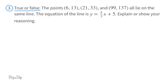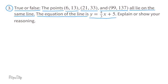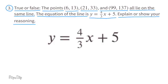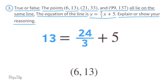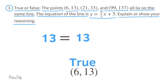Problem number three: true or false? The points (6, 13), (21, 33), and (99, 137) all lie on the same line with equation y equals 4 thirds x plus 5. Substituting (6, 13): 4 thirds times 6 equals 24 thirds, which equals 8. 8 plus 5 is 13, and 13 equals 13, so this is true.